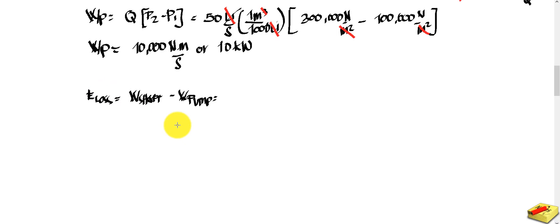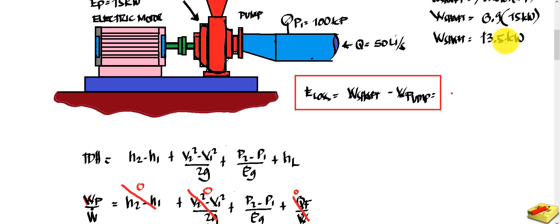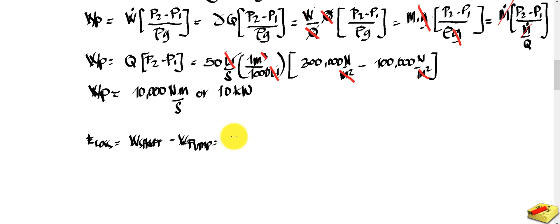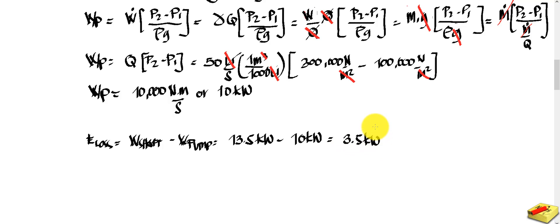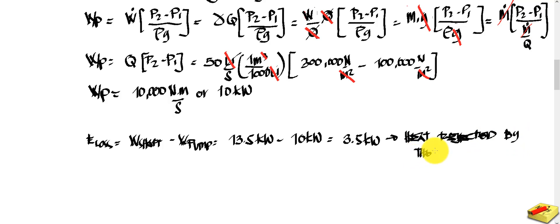Substituting the values: E_loss equals work of the shaft minus water horsepower, so that is 13.5 kilowatt minus 10 kilowatt, giving E_loss equal to 3.5 kilowatt. This is the heat being rejected to the system due to inefficiency and friction.